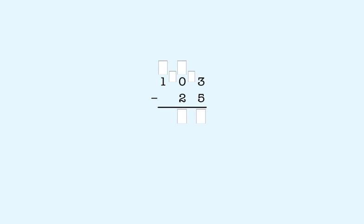So we take a 100 from the hundreds place to make 10 tens. We cross out the 1 to show that we took a 100. We don't need to put anything here because there are no hundreds left. We put a 1 here to show that we made 10 tens. Now we can take a 10 from the tens place to make 10 ones. We cross out the 10 by clicking on the 0 or the 1, and we put a 9 here to show that we have 9 tens left.